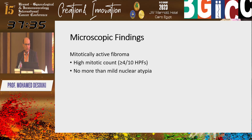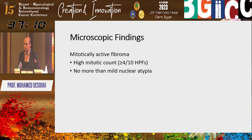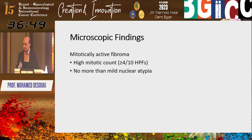Mitotically active fibroma has a high mitotic count — greater than or equal to 4 mitoses per high-power field — with no more than mild nuclear atypia. Even if you have 10 mitoses per 10 high-power fields, the key is the nuclear atypia: no nuclear atypia means no fibrosarcoma. If there is nuclear atypia, then we talk about that separately. Any mitotic figures with no atypia — call it mitotically active fibroma.